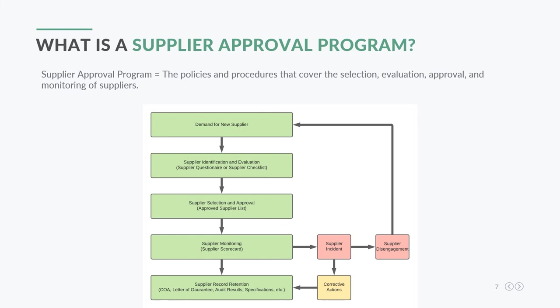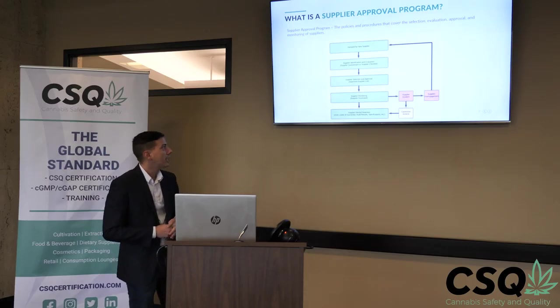The next part of the process is supplier selection and approval — what we call your approved supplier list. This is exactly what it sounds like: a list of all your approved suppliers with their name, contact information, and emergency contact information. When dealing with supplier approval programs, the whole point is to minimize risk coming into your facility, so if that supplier has a recall, you need all that information handy.